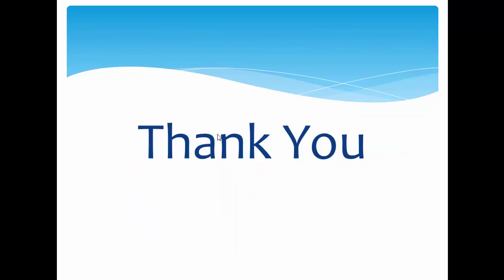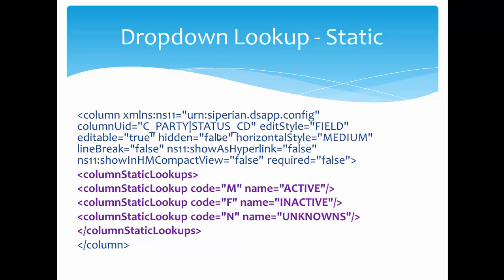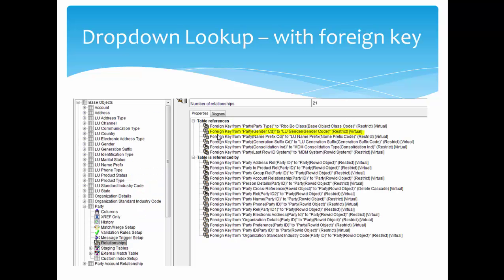In today's session we covered two types of dropdown lookup: the static type, for which we configure the bdd_config.xml with predefined values, and the foreign key column lookup, where the MDM Hub developer configures the foreign key columns. The remaining lookup types will be covered in upcoming sessions. Keep watching, subscribe to the channel — thank you for watching.